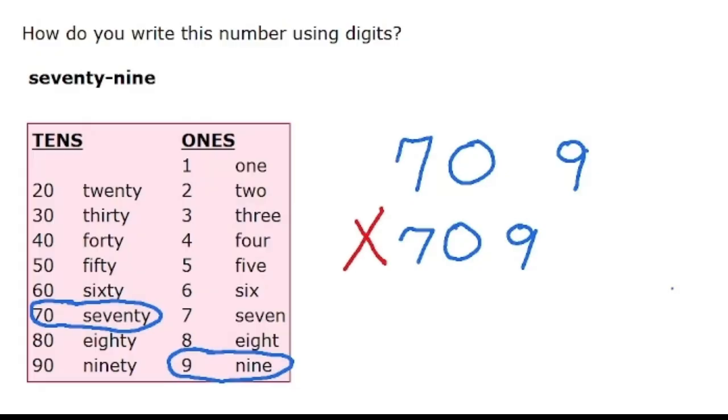So this is going to help you later when you learn place values. The correct way to write this is with 79, just like that, without the 0. Because 70 is just 70,